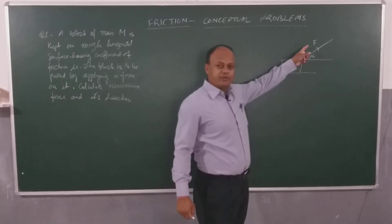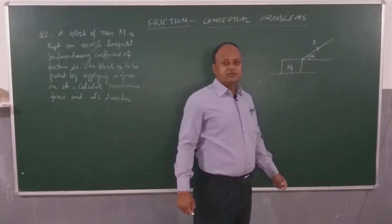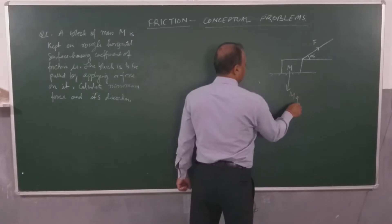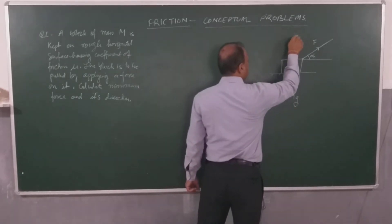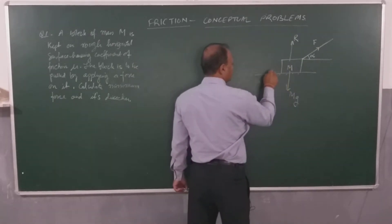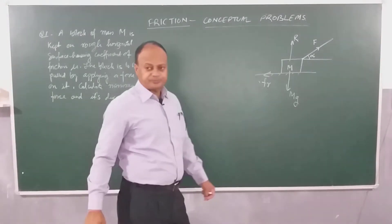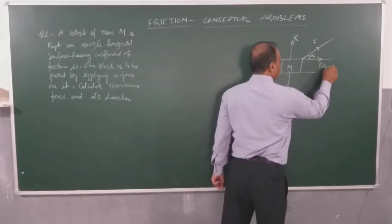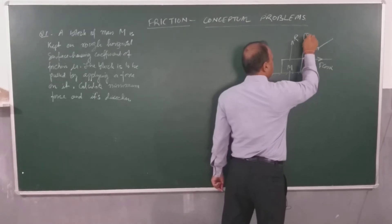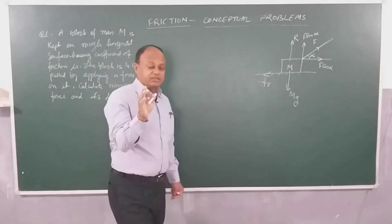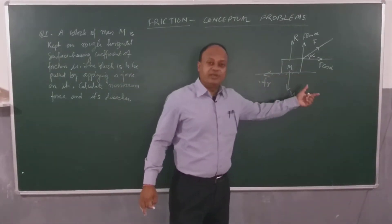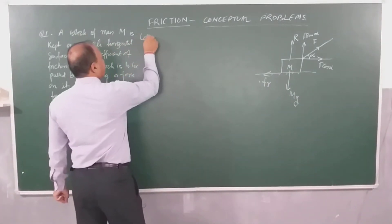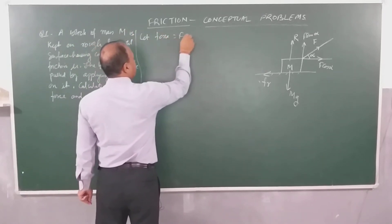I have to calculate the minimum magnitude of F and the angle alpha for which F will be minimum. Let's see the free body diagram: weight mg is downward, normal reaction R is upward. If I try to pull it to the right, then force of friction fr is acting to the left. Resolving the force: horizontal component is F cos alpha and vertical is F sin alpha. The force is to be minimum means the block is on the verge of moving and all forces are in equilibrium.